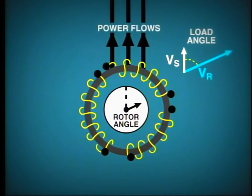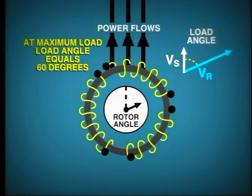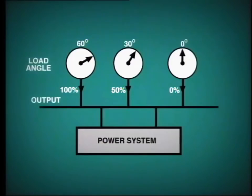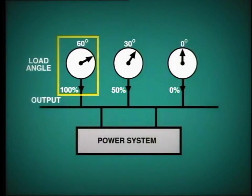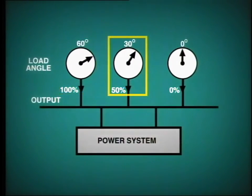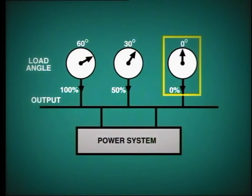In each case, the rotor settles down to its new condition and continues to run at the new load angle. At maximum load, the load angle will probably be about 60 degrees. So now you can see if we have, say, three units in parallel on a common bus: the unit generating at 100% capacity will have a load angle of about 60 degrees, the unit at 50% output will have a load angle of about 30 degrees, and the unit at zero load has a load angle of zero degrees.